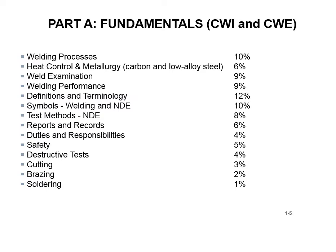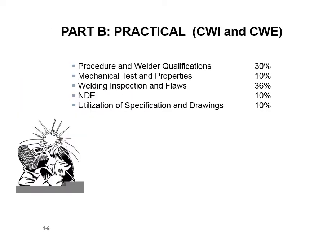Test methods and NDE are 8%, reports and records 6%, duties and responsibilities for safety 5%, destructive tests 4%, and cutting, brazing, and soldering are 3%, 2%, and 1%. This is the percentage breakdown of what's on the test, so you know what to study. None of it is rocket science — it's just learning the welding world and its definitions, kind of like learning a new language.